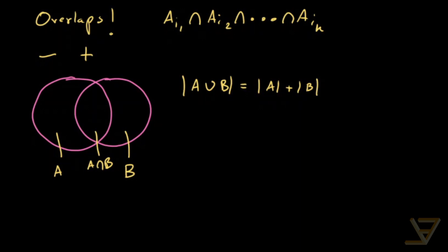But the problem is that this section in the middle is counted twice. So what we do is subtract once the A intersection B. So that's called the principle of inclusion exclusion for two sets.